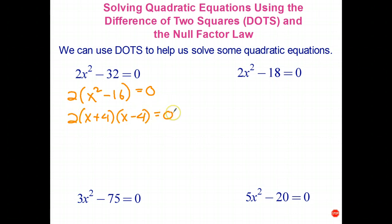Can I say 2 equals 0? Well, obviously not. The 2 doesn't equal 0. So in terms of solving the equation, we can pretty much ignore the 2 and just write either x plus 4 equals 0 or x take 4 equals 0. And therefore, x either equals negative 4 or x equals positive 4. So that equation, once again, has two solutions.